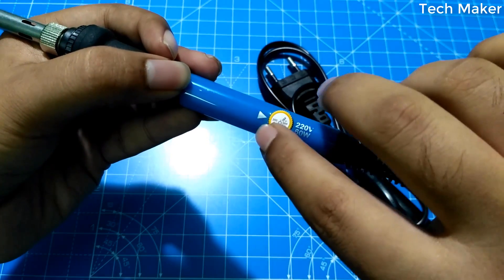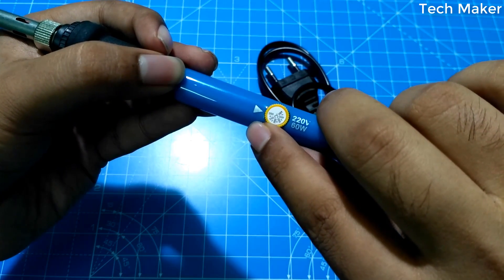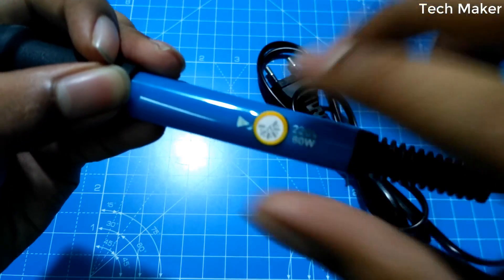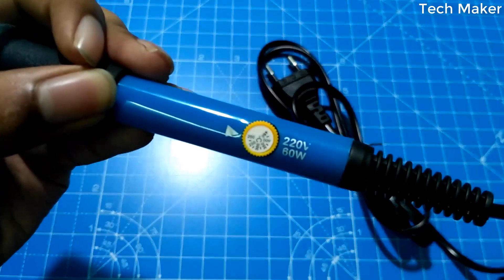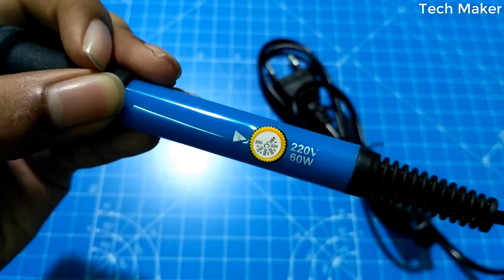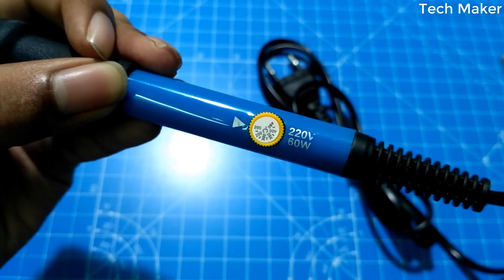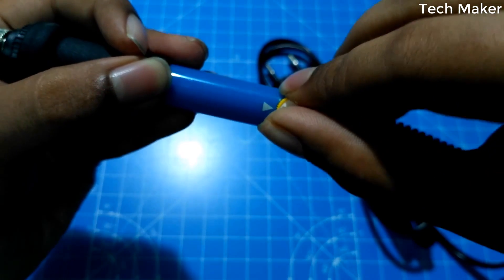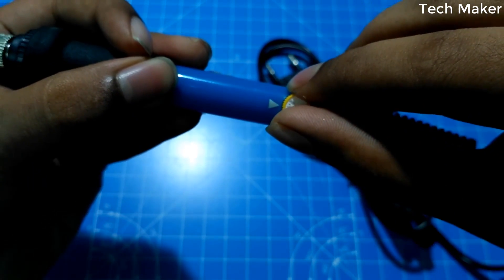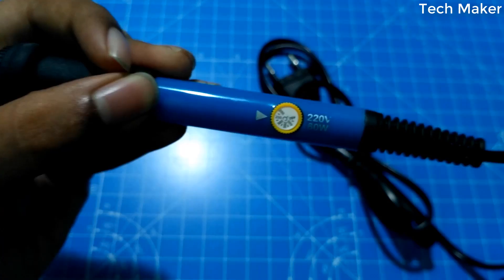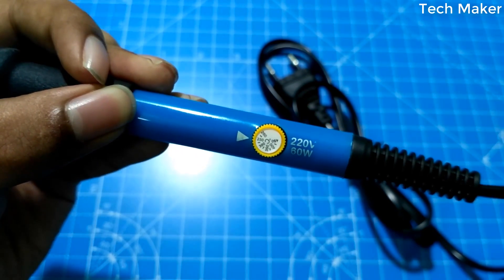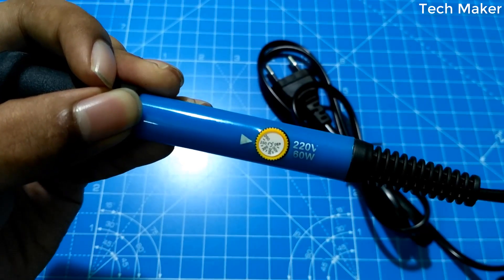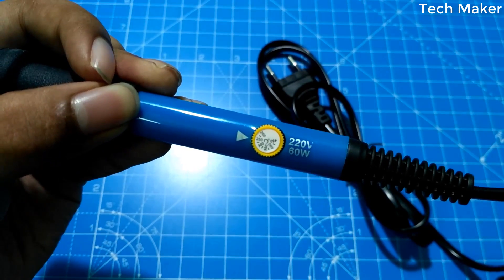There is an indicator arrow mark here to adjust the level of the temperature. Here it is labeled as 200. And if you want to adjust or increase the temperature, you can slightly rotate this tip pointing the arrow mark. Now it is at 250 degrees centigrade. Like this you can adjust in the range of 200 to 450.